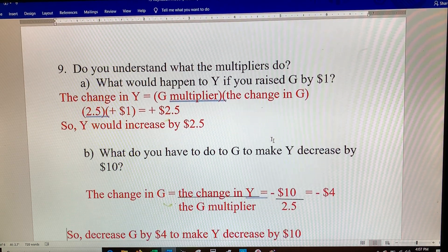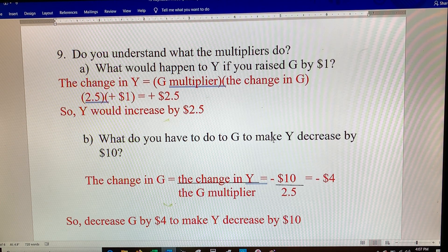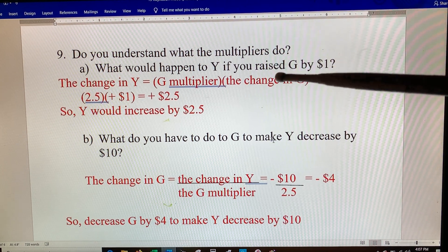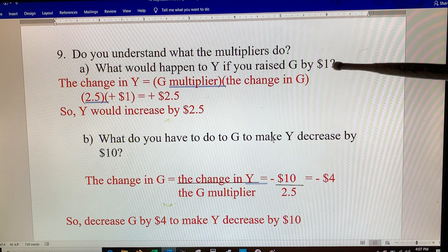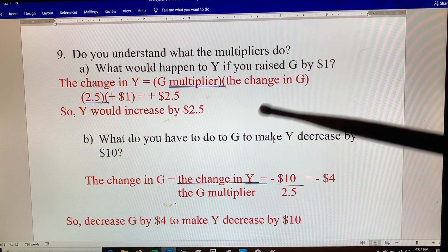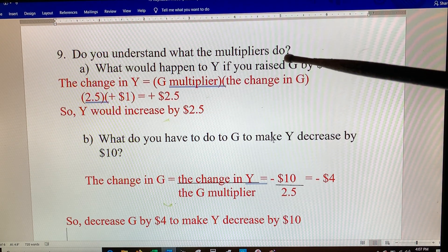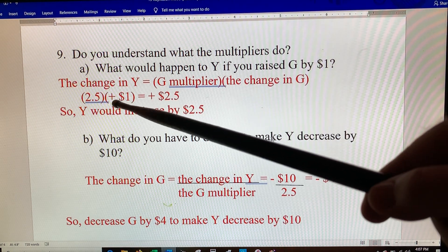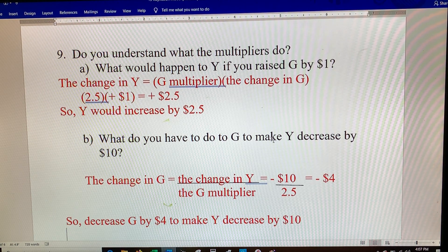Just a little review about the multipliers. Do you really understand what the multipliers do? What would happen to GDP if you raise government spending by a dollar? Well, the multiplier says any change in GDP would be the multiplier times the change in your government spending. If this was one dollar, a positive one, then it'd be positive one times your multiplier, be a two and a half dollar increase. So Y would increase by two and a half dollars.